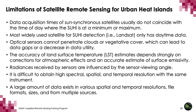Below are some limitations of satellite remote sensing for urban heat islands. Data acquisition times of sun-synchronous satellites usually do not coincide with the time of day when the surface urban heat island is at a minimum or maximum. Landsat only provides daytime data, not nighttime data. Optical sensors cannot penetrate clouds or vegetative cover, which can lead to data gaps. The accuracy of land surface temperature estimates depends strongly on corrections for atmospheric effects and accurate estimates of surface emissivity. It is also difficult to obtain high spectral, spatial, and temporal resolution with the same instrument, and a large amount of data exists in various spatial and temporal resolutions, file formats, and sizes from multiple sources.